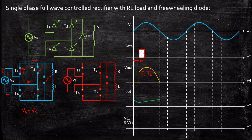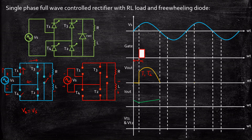During the negative half cycle of the supply voltage, when Vs goes negative, T1 and T2 will be reverse biased. Because of this, the inductor, which was previously having polarity plus and minus, will change its direction to minus and plus according to Lenz's law — it does not allow sudden change in current. This plus is connected to the anode of the freewheeling diode and minus to the cathode, so the freewheeling diode acts as short circuit and current flows through the load.